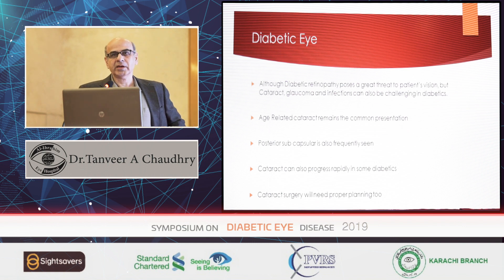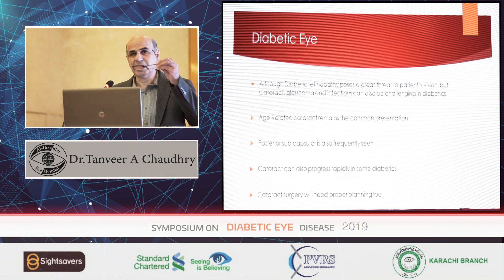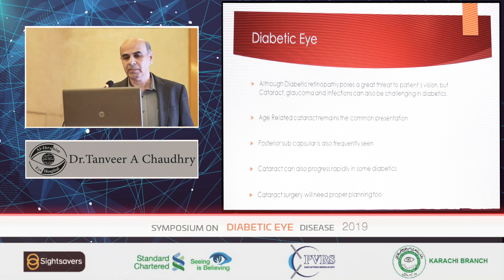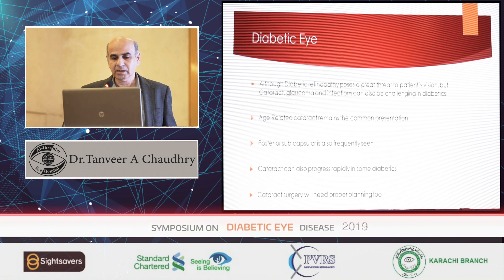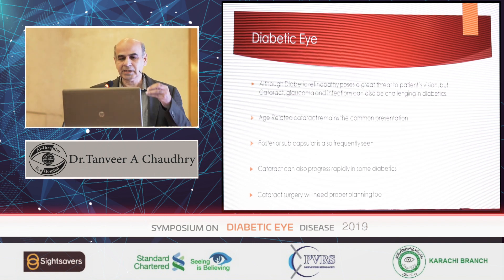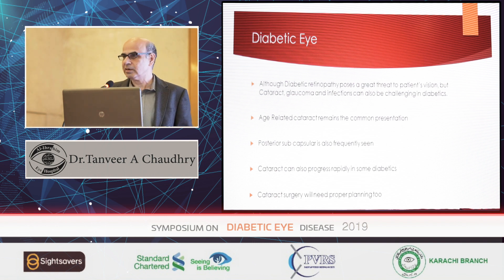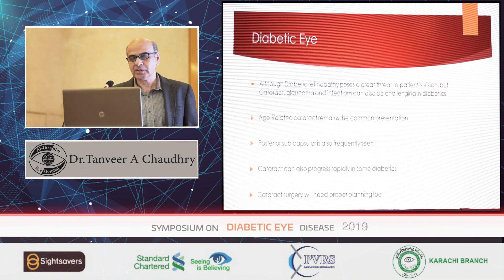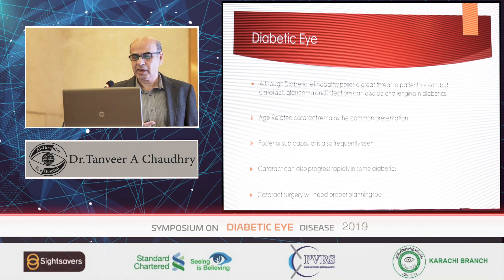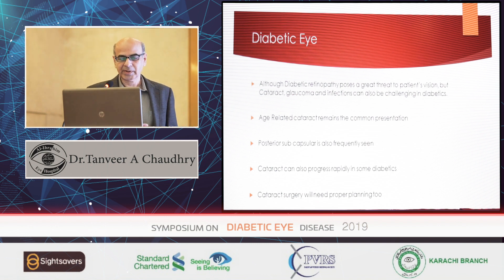As we know, diabetic retinopathy is the main reason for blindness, but other aspects should never be ignored. Corneal cell loss has been reported in diabetic patients leading to post-operative complications. But cataract complications should never be ignored. My talk is about cataract, so I will stick mainly to the practical points.